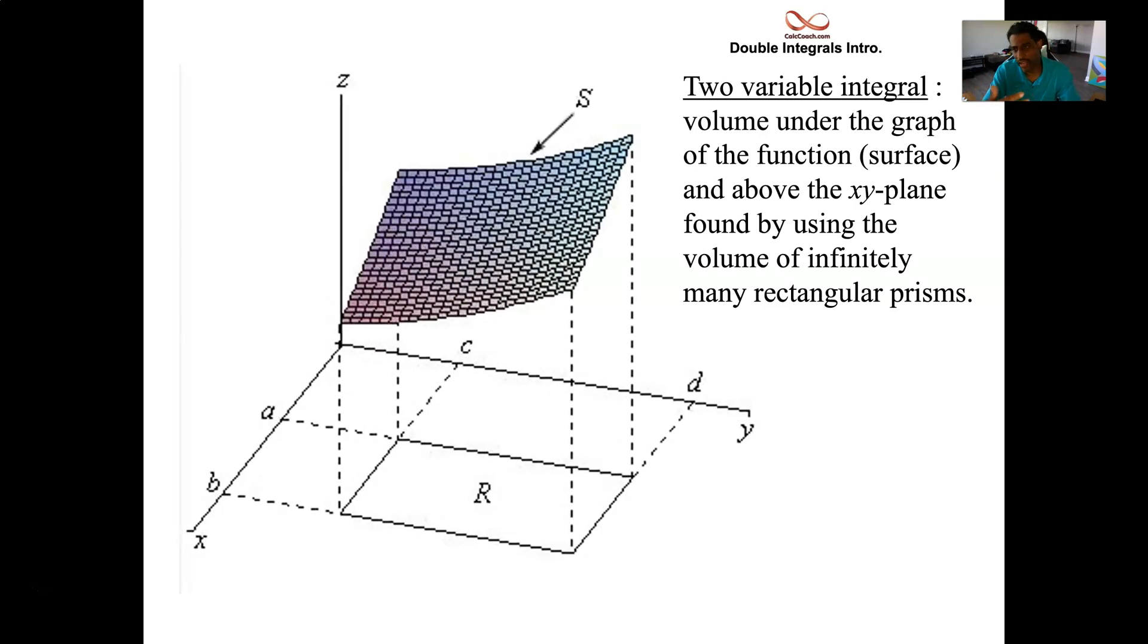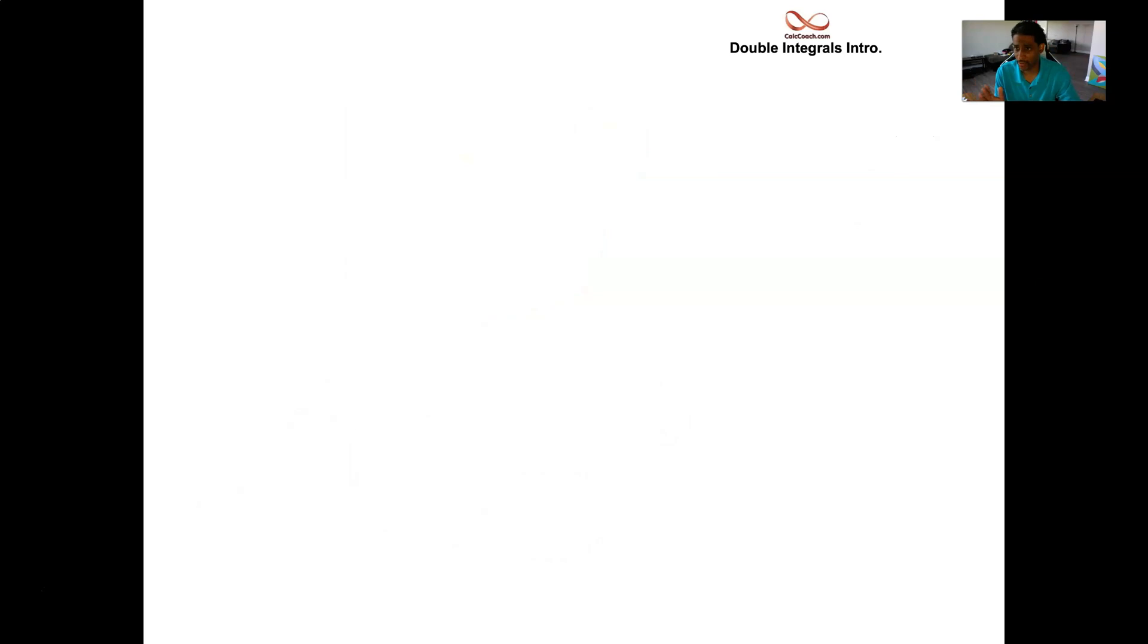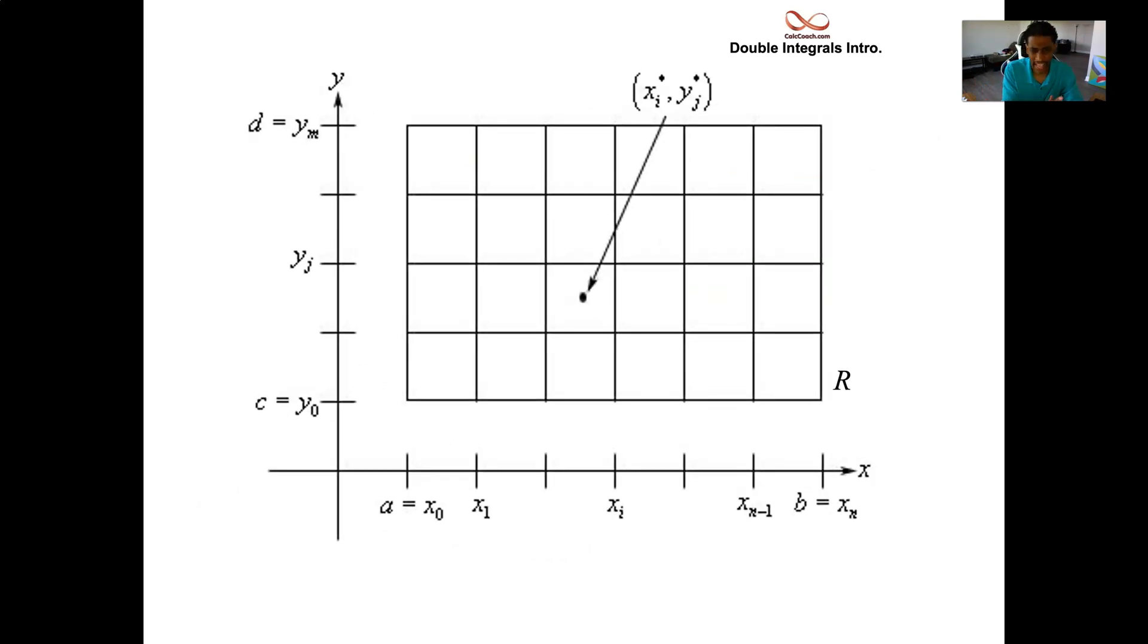Chop that into subintervals, so you have an interval on x and an interval on y. Chop those into subintervals. You don't have to chop them into the same amount. Then you'll be finding these volumes, these rectangular boxes. It'll be an approximation to the volume of this three-dimensional shape. The region in the xy plane is chopped into subregions. We have the x interval chopped into six subintervals, the y interval chopped into four subintervals, giving us these rectangular blocks.